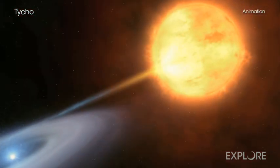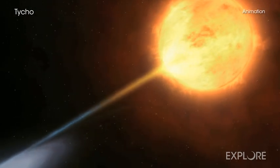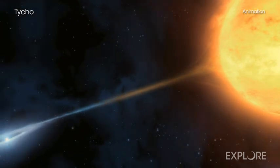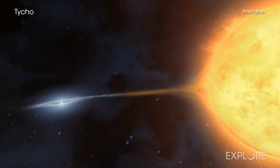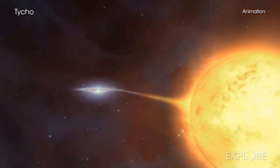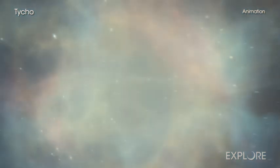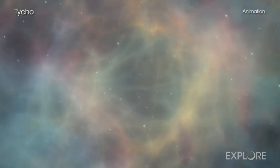This particular supernova was a so-called type 1a, which occurs when a white dwarf star pulls material from, or merges with, a nearby companion star, until a thermonuclear explosion is triggered. The white dwarf star is obliterated, sending its debris hurtling into space.